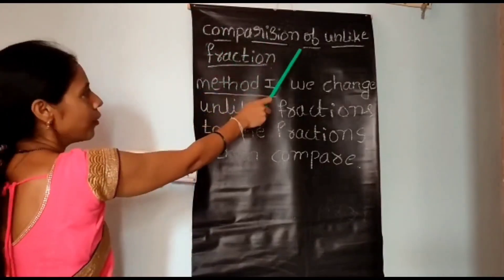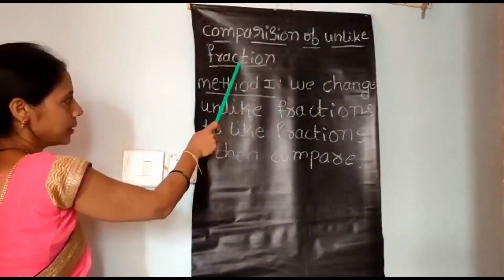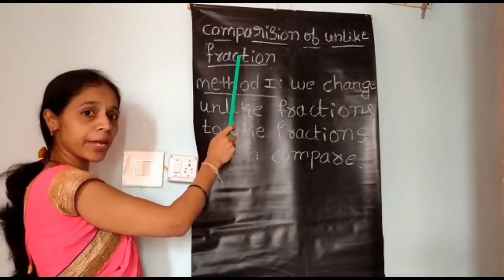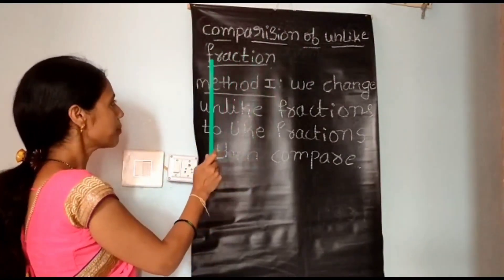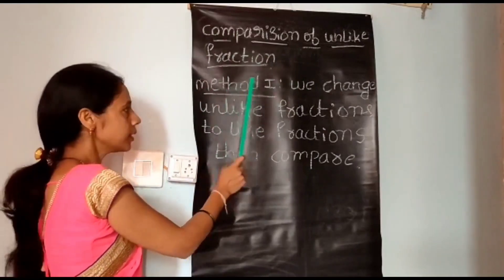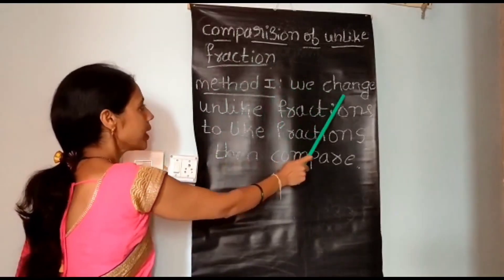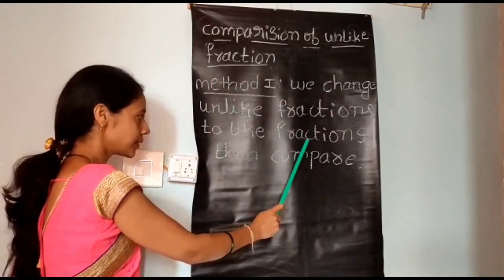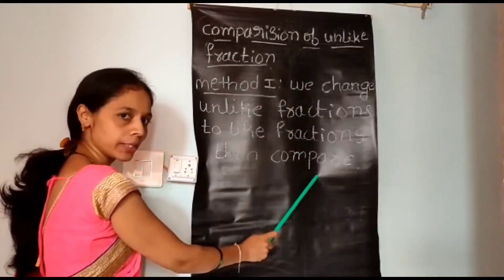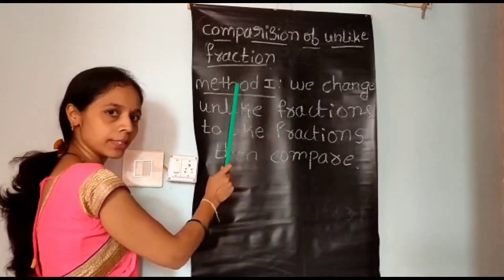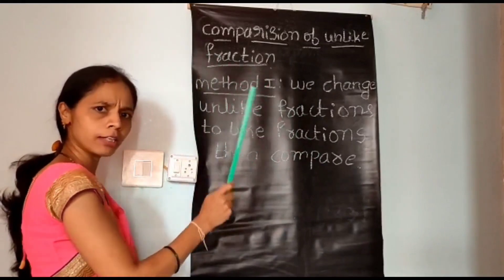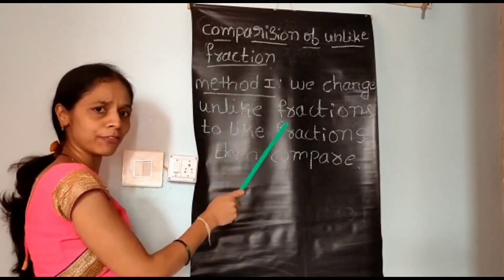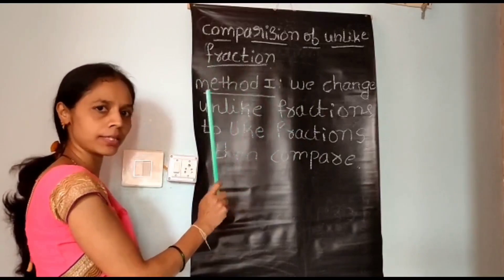Comparison of unlike fractions: unlike fractions can be compared using two methods. In the first method, we convert unlike fractions into like fractions and then compare. In the second method, we use cross multiplication.